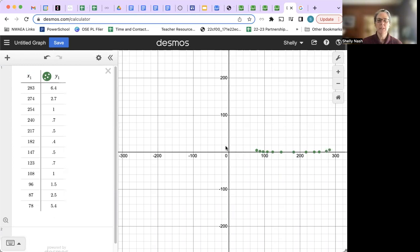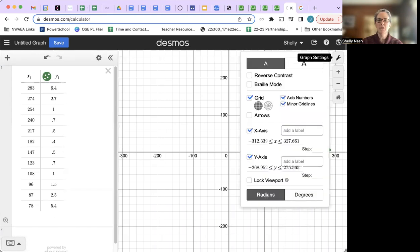What I want to do is probably change the axis so that the graph will show up. I click on the little wrench right there and I see the y-axis goes all the way up to 275.